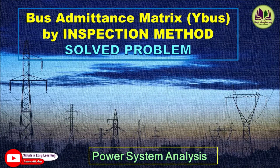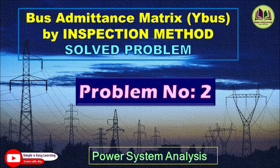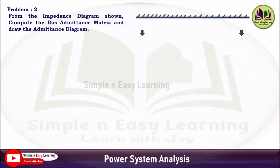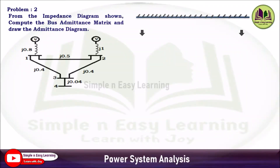Bus admittance matrix by inspection method, problem number two. From the impedance diagram shown, compute the bus admittance matrix and draw the admittance diagram. In this problem, the impedance diagram is given and you need to obtain the Y-bus matrix and draw the admittance diagram. For simplicity, we first draw the admittance diagram, from which you can easily form the Y-bus matrix.